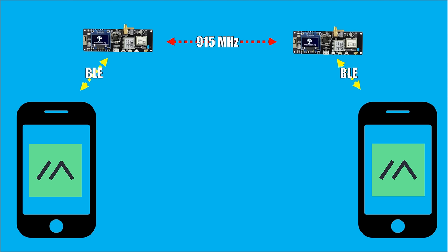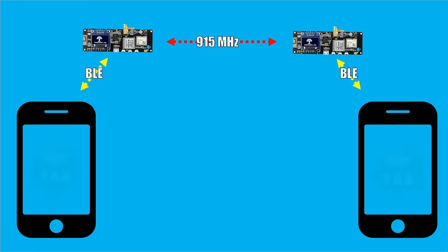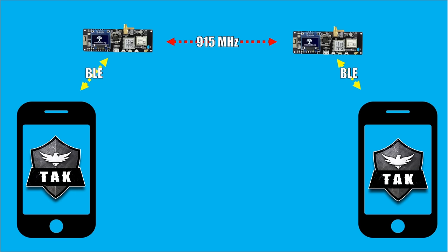Meshtastic itself is a very basic mapping software with a very basic messaging service. But what if we could take Meshtastic's ability to use these Meshtastic boards — these little $25 radios essentially — and use another app with that, say ATAK? Let's jump right in and figure out how to do that.